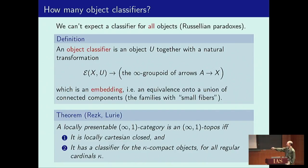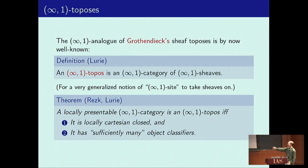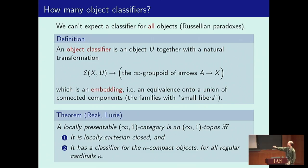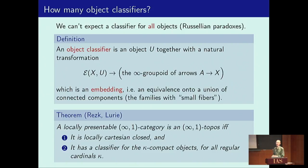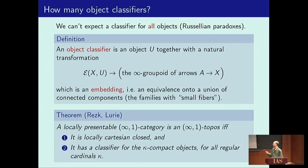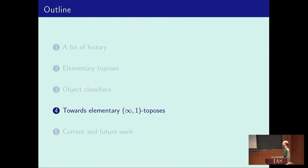This is what is meant by 'sufficiently many object classifiers': for regular cardinals κ, you have a classifier for objects with fibers bounded in size by κ. Just like the definition of elementary topos has a subobject classifier, the definition of an infinity-one topos involves an object classifier.